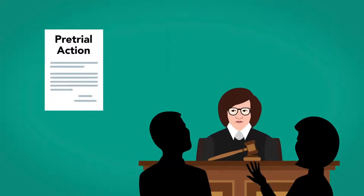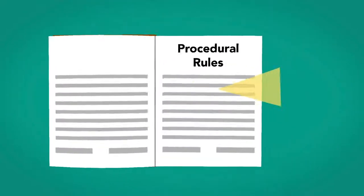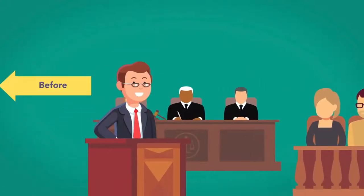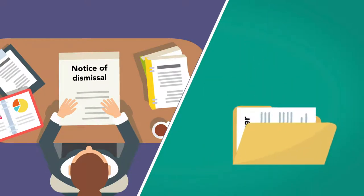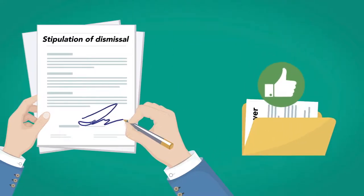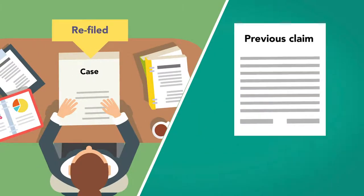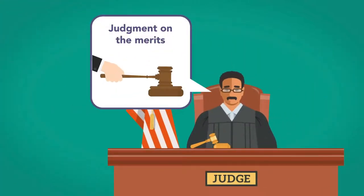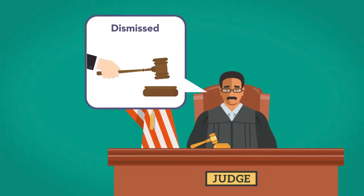While most pretrial actions are motions related to discovery, there are several civil pretrial procedural rules that can affect a case. At any time after the complaint is filed and before the trial starts, the plaintiff can dismiss the lawsuit by filing either a notice of dismissal if no answer has been filed, or a stipulation of dismissal signed by all parties if an answer has been filed. That dismissal is usually without prejudice, which means that the case can be refiled unless a previous claim with the same facts and parties already had been dismissed, in which case it is considered a judgment on the merits. If a counterclaim has been filed or there are other considerations of fairness, the court may decline to dismiss the case.